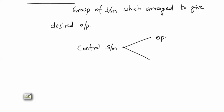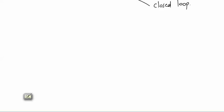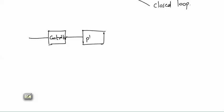Control systems are classified into two types: open loop system and closed loop system. Schematically, the open loop system can be shown as having a controller and a plant, where you apply input and get output.